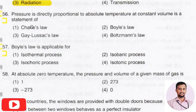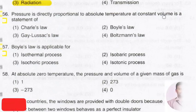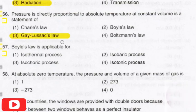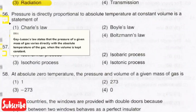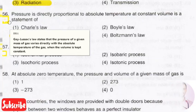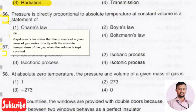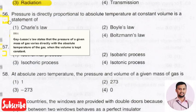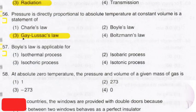The next question: pressure is directly proportional to absolute temperature at constant volume. This is a statement of? The right answer is option 3, that is Gay-Lussac's law. It states that the pressure of a given mass of a gas varies directly with the absolute temperature when volume is kept constant.